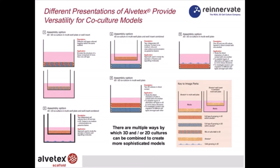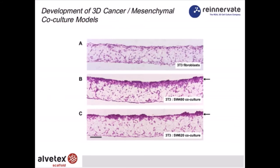Here is an example: in panel A, fibroblasts are established for seven days, and then a cancer cell line is seeded on the surface of the fibroblast 3D culture. The aim of this co-culture is to develop a model of tumor invasion, whereby cancer cells invade among the fibroblasts mimicking the equivalent of stromal tissue.